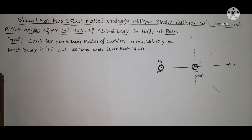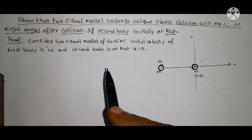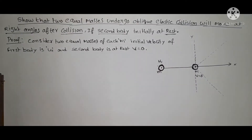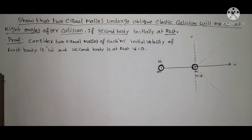In this oblique elastic collision, first of all, what is a collision? A strong interaction between two bodies which involves exchange of momenta is called a collision. There are two types of collisions: one is head-on collision, another is oblique collision. In head-on collision, if the velocities of colliding objects before and after collision are along a straight line, such collisions are called head-on collisions. Oblique means if the velocities are not along the straight line, such collisions are known as oblique collisions.